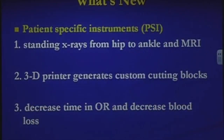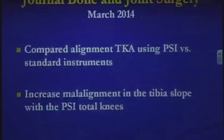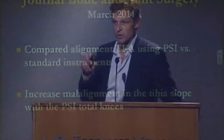Patient-specific instrumentation uses a standing hip-to-ankle x-ray and an MRI of the knee. A 3D printer then prints customized cutting blocks for use in surgery, which decreases operating time and blood loss, though at increased cost. The cutting blocks are pinned to the femur and tibia with slots where the cuts are made. However, a recent article in the Journal of Bone and Joint Surgery showed increased malalignment in tibial slope with patient-specific total knees — likely because fitting the tibial cutting block is trickier than the femoral block.